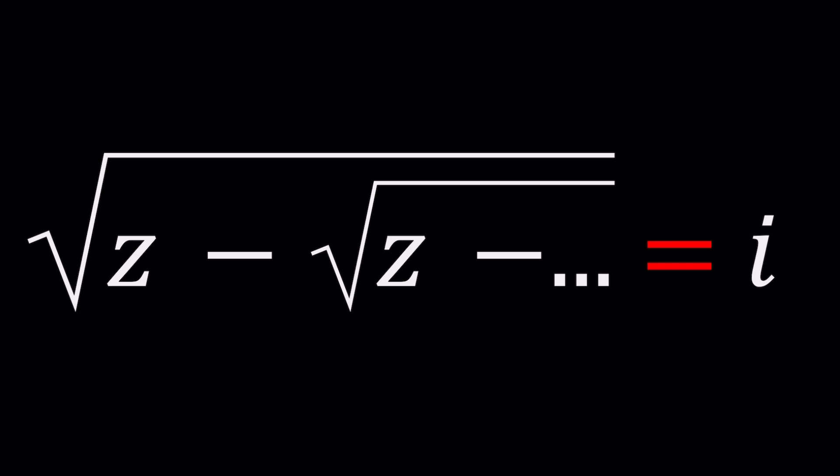So we have the square root of z minus the square root of z minus the square root of z, so on and so forth. It goes on forever, right? And the whole thing is equal to i. How can something that is infinite equal a finite number?